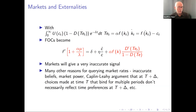There are lots of other reasons for querying market rates: people may have inaccurate beliefs about the future, there may be market power distorting things, and there's an interesting argument by Kaplow and Leahy showing that choices made at time T that bind choices from multiple periods mean that what you observe at T plus delta doesn't necessarily reflect time preferences at T plus delta. On the whole, it's really very difficult to obtain useful information about long-term discount rates from markets.